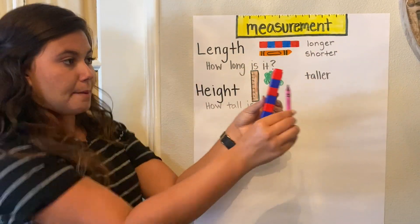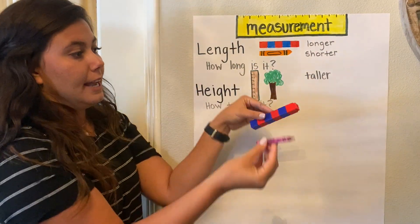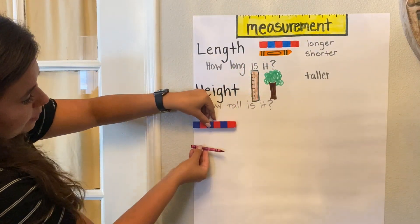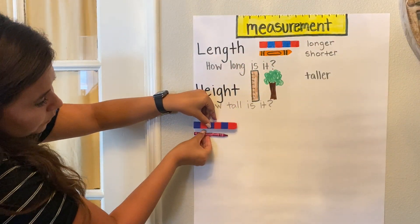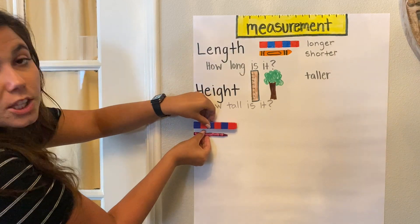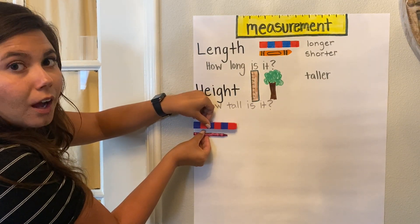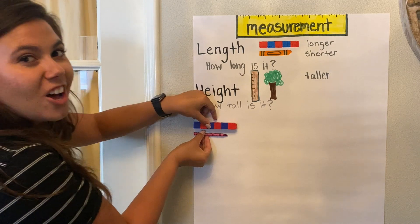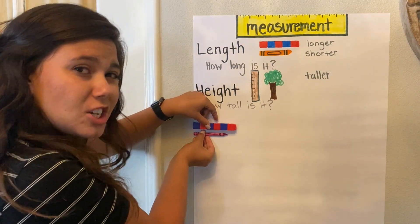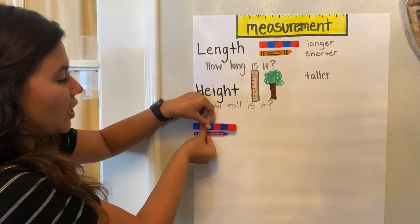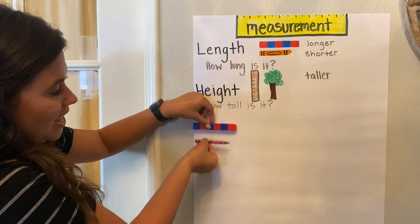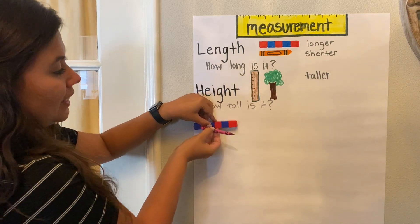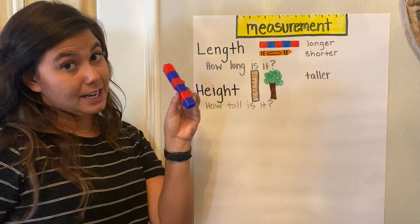So I have my cube train and my crayon and I'm looking at the length. I'm going to start them both in the same spot. Which one is longer? The cube train is longer. Which one is shorter? The crayon is shorter than the cube train. The cube train is longer.